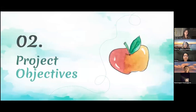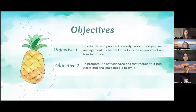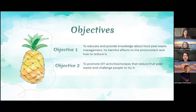We will be talking about the project objectives. There are two main objectives. The first objective is to educate and provide knowledge about fruit peel waste management and its harmful effects on the environment and how to reduce it. Objective number two is to promote DIY activities or recipes that reduce fruit peel waste and challenge people to try it.